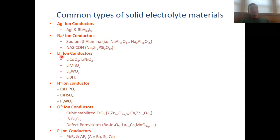We know a number of lithium ion conductors, some of which also have electronic conductivity. For instance, lithium cobaltate is a lithium ion conductor but it's also an electronic conductor — it is actually used as a cathode in lithium ion batteries. Other lithium ion conductors include lithium manganate, lithium tungstate, and lithium borate.